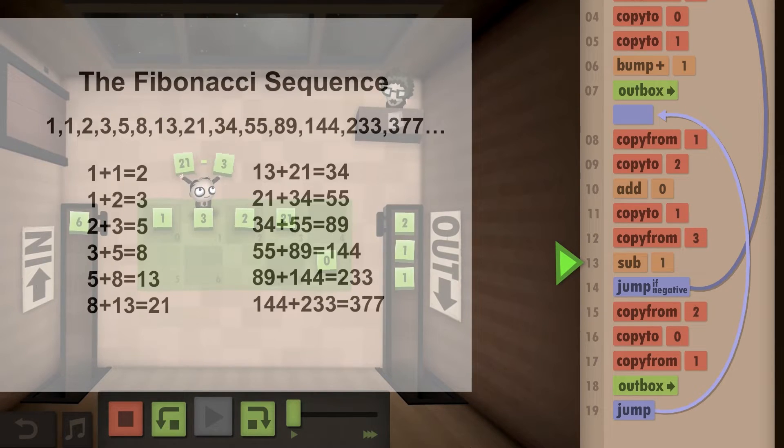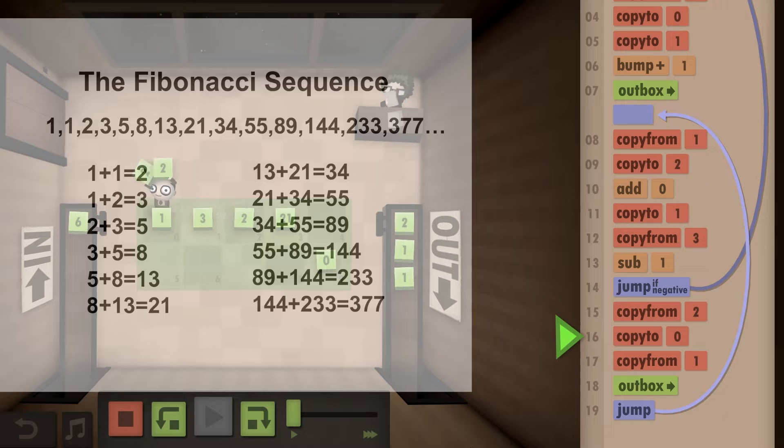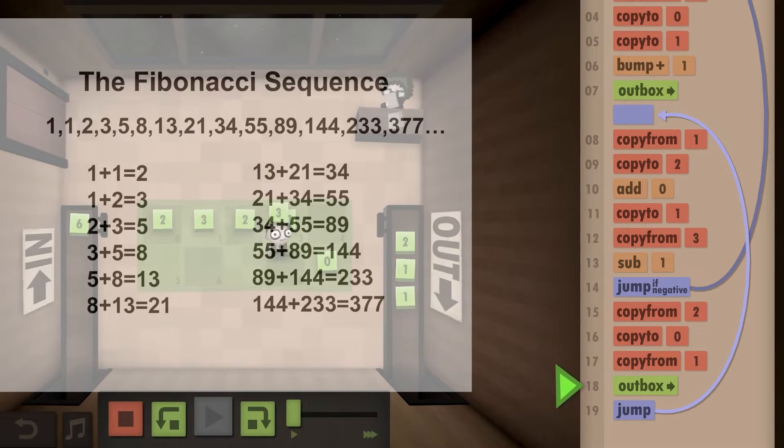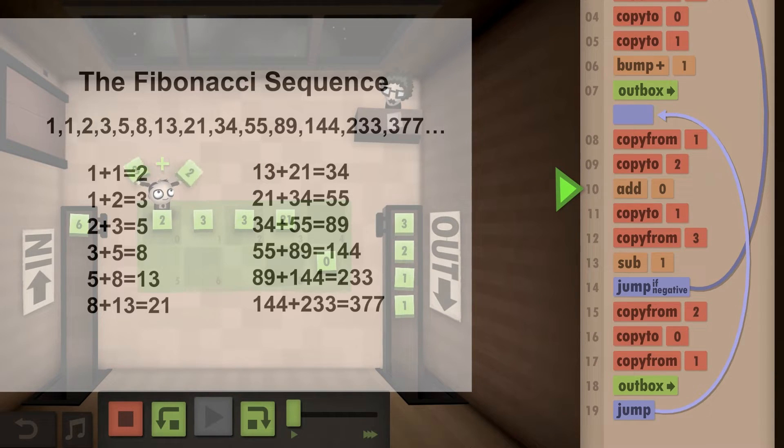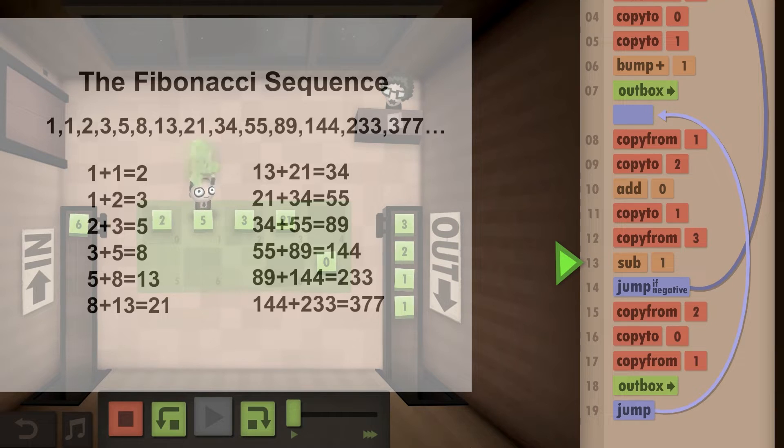If the first number is zero, then it's one, then it's one again. Now we add one and one to get two, then add two and one to get three, add three and two to get five, and then it's 8, 13, 21, 34, 55, 89, 144, 233, and so on.